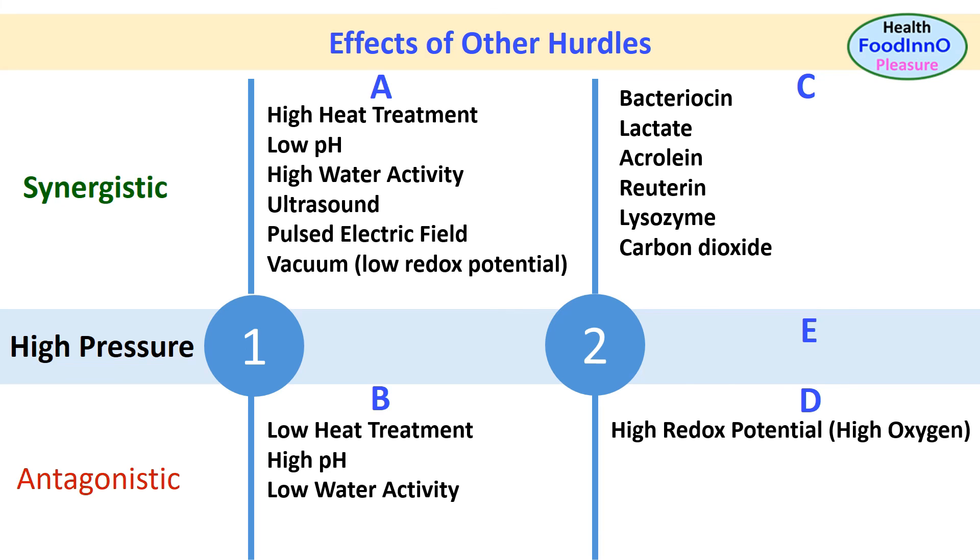In group 2D, the listed hurdles work as antagonistic, that is high redox potential. In group 2E, this shows insignificant effect, that is neither synergistic nor antagonistic. These are sulfite and dimethyl bicarbonate.